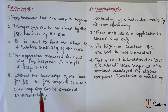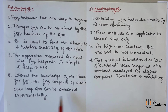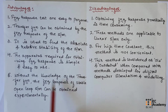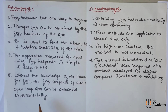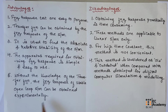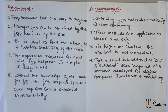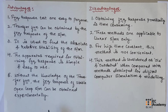Without knowledge of the transfer function, the frequency response of a stable open loop system can be obtained experimentally. So even without knowing the transfer function, we can obtain the frequency response practically and experimentally. From that frequency response, we can then find the transfer function of the system.